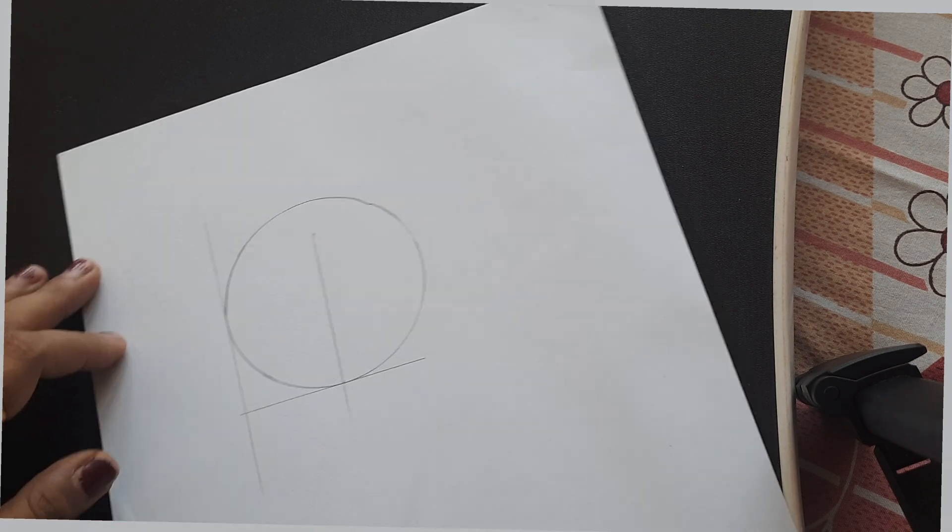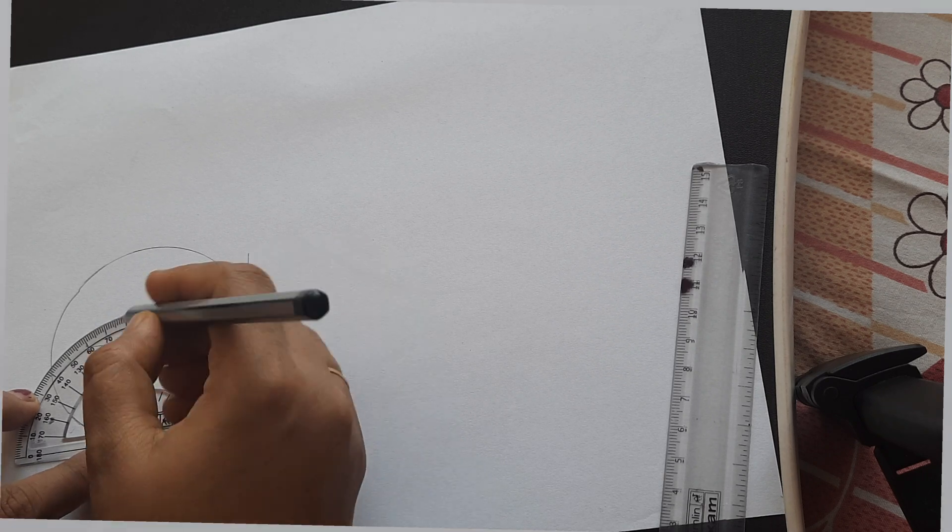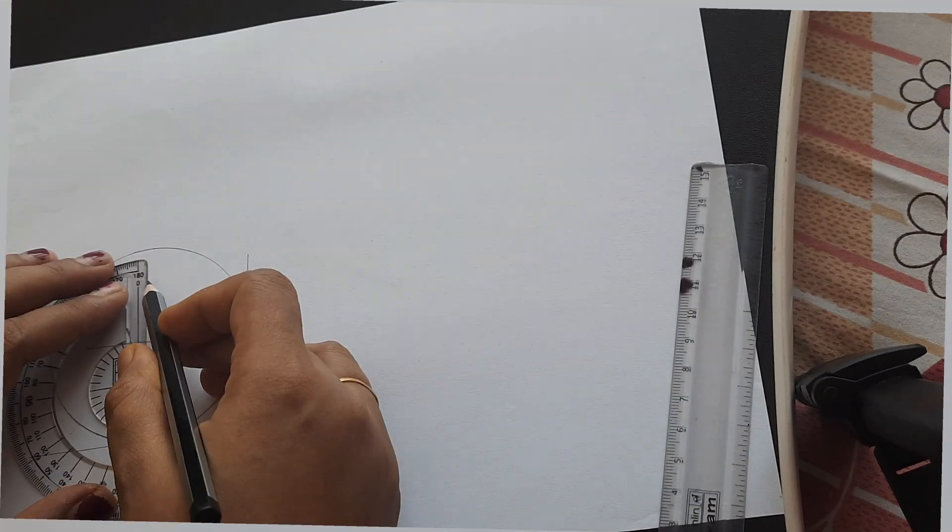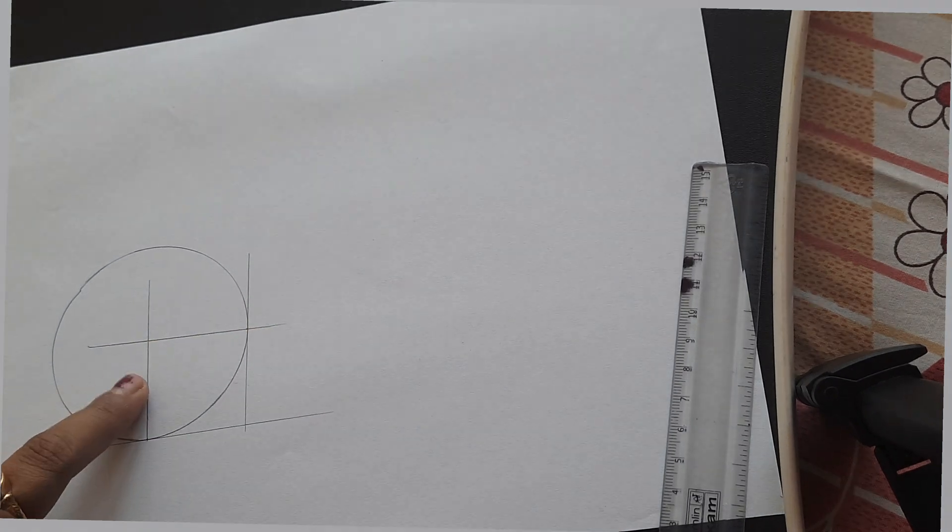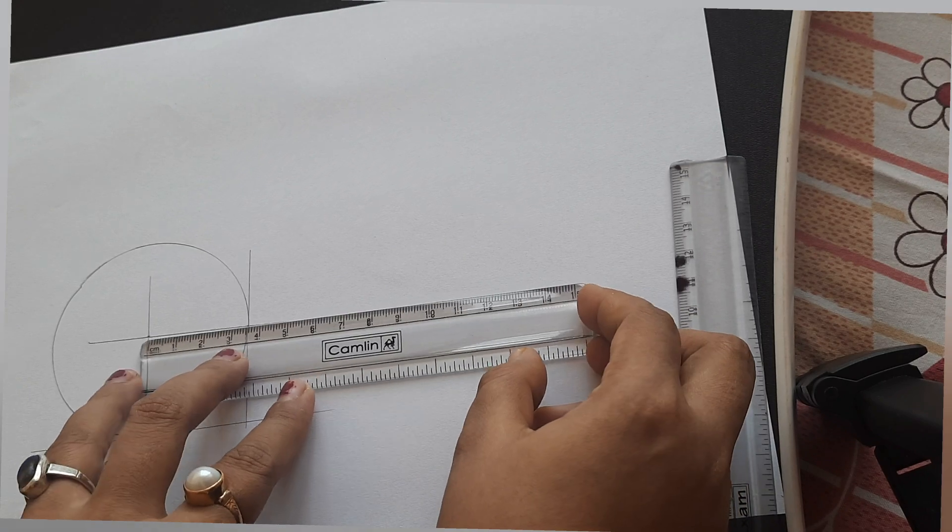So this is my one normal of the tangent and here this is my point of intersection. I am drawing 90 degrees. Another normal I am drawing. Normal means a line that is perpendicular to the tangent. This is my another normal point of intersection. This is my center of the circle.